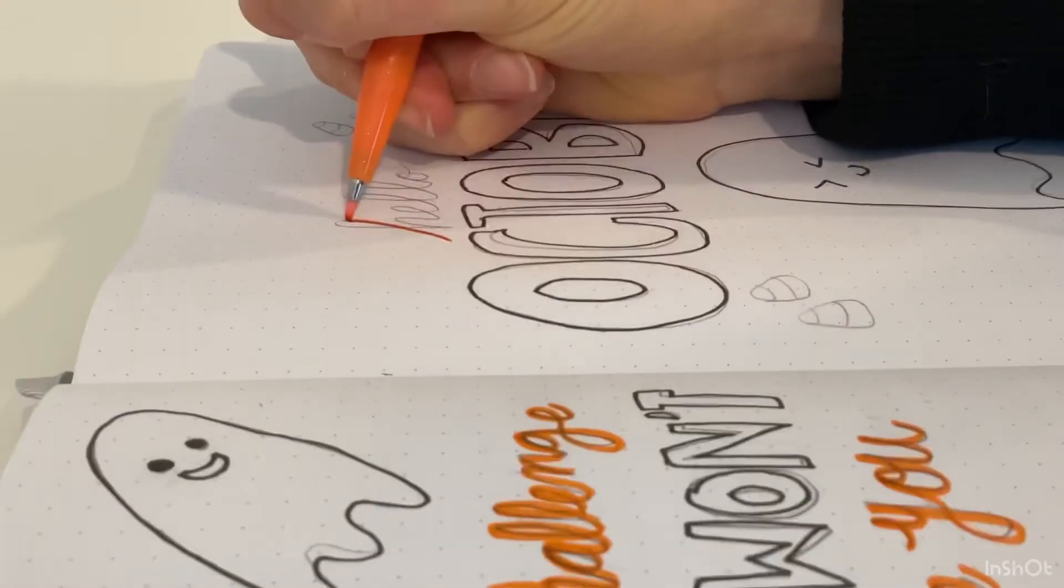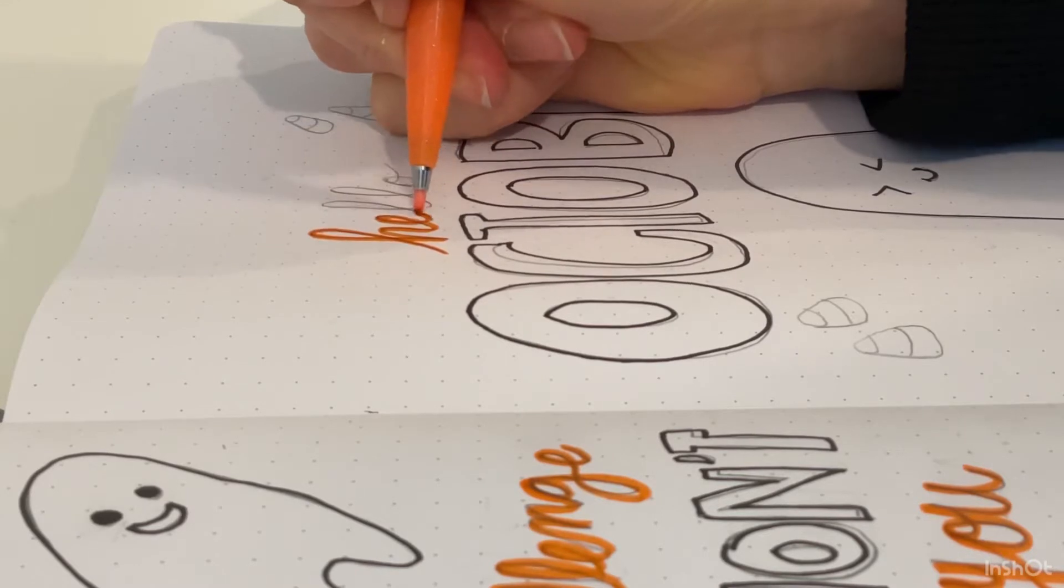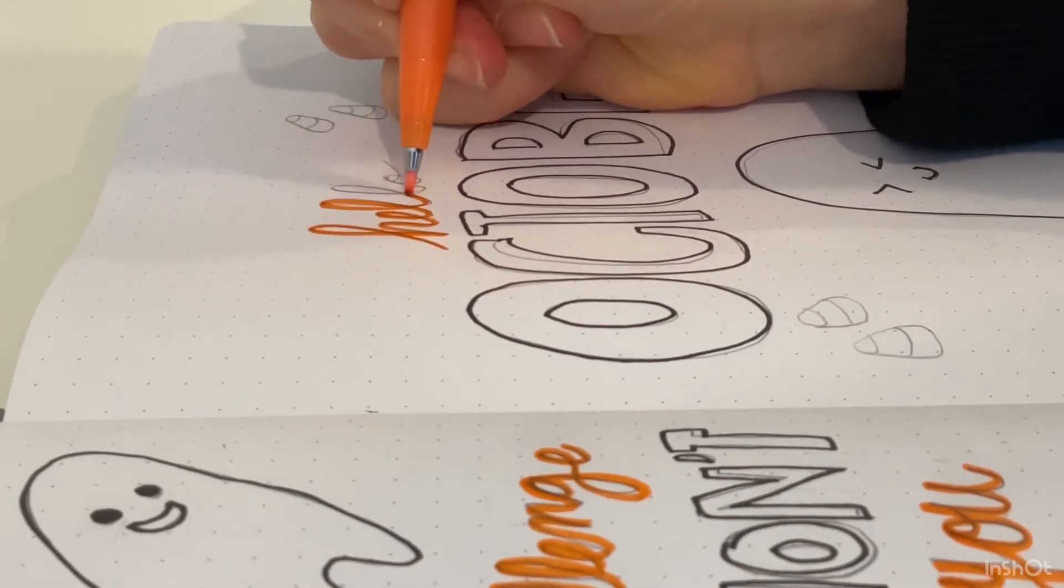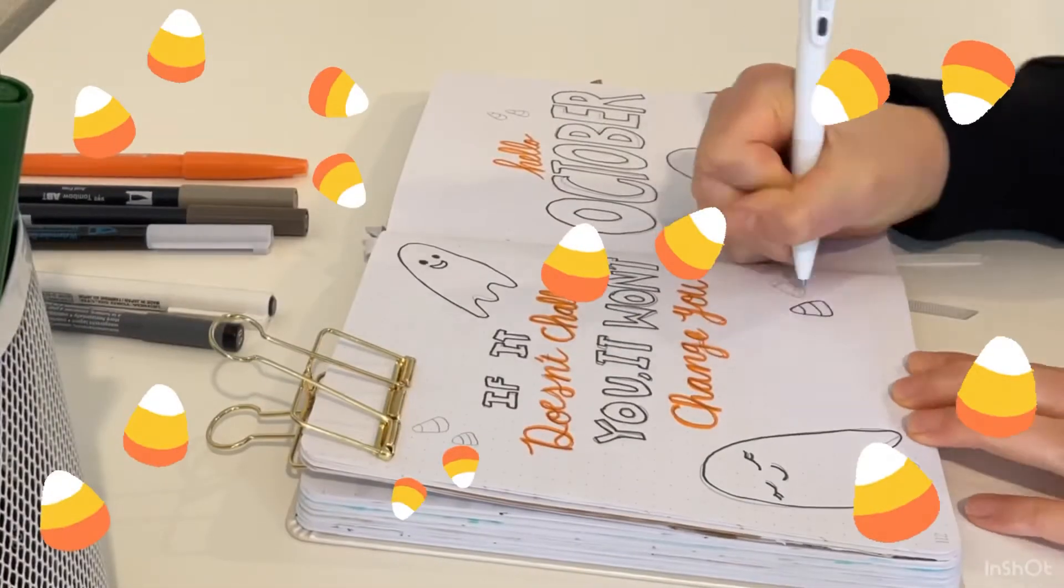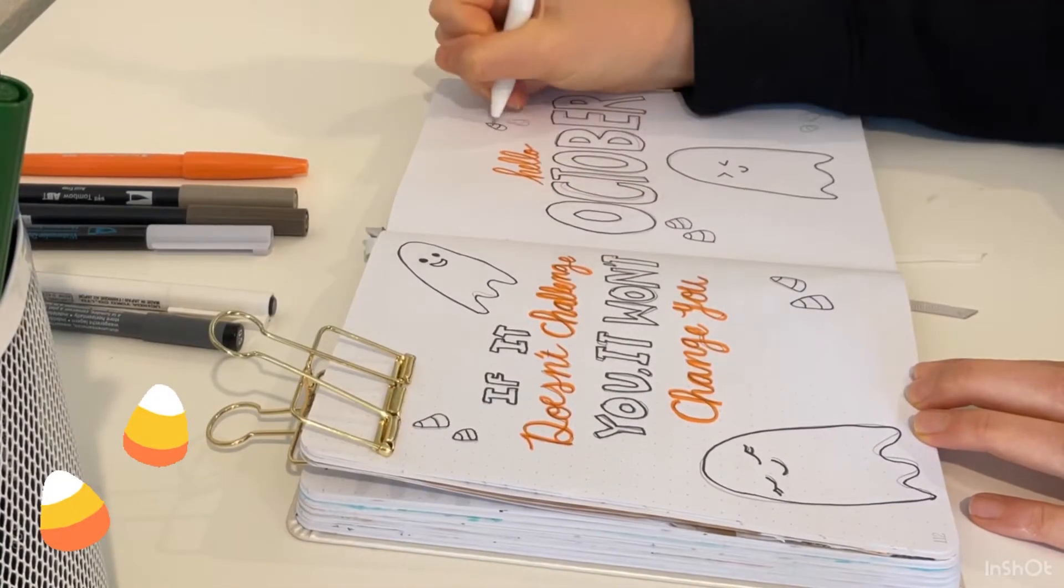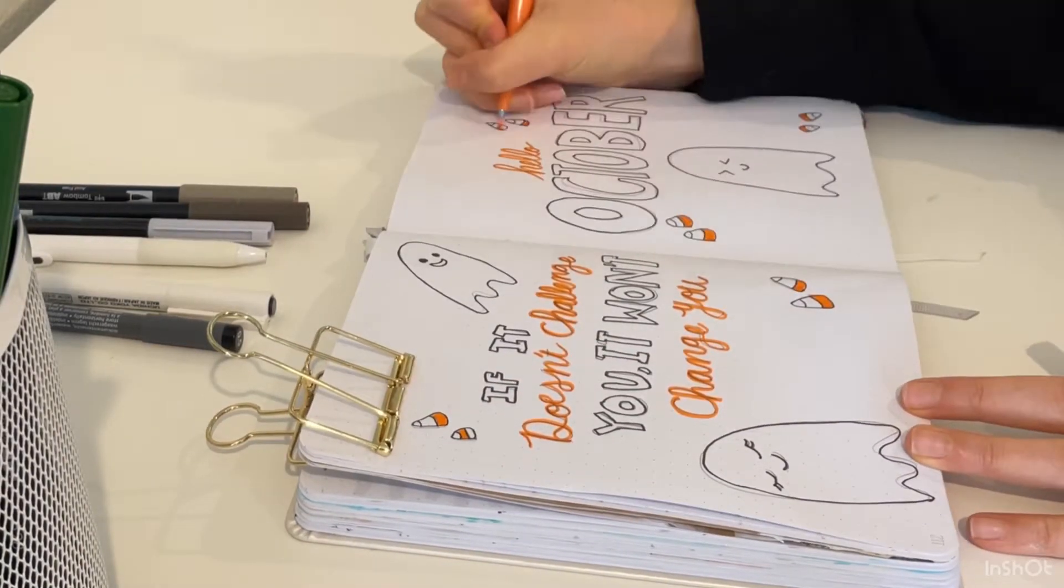Right above the October block letters, I'm going to be adding an orange cursive 'hello' just to spice up the page a little bit more. Then we are going to scatter candy corn all over the page. First I'm going in with this thinner pen and then I'm going in with orange and yellow - they're just like Crayola markers.